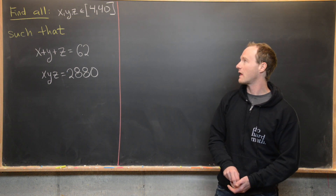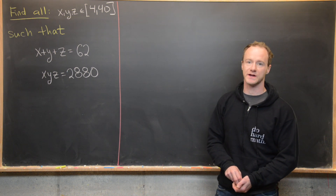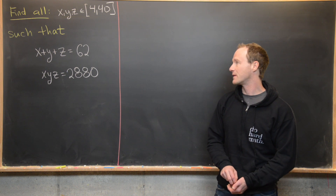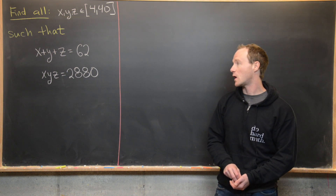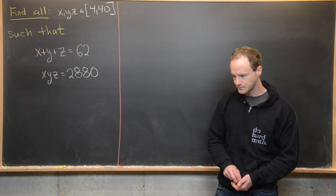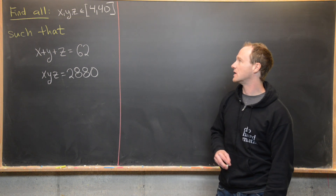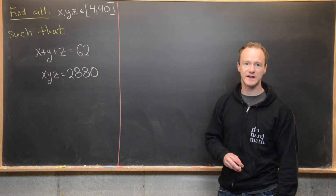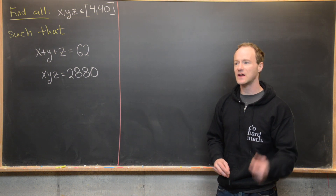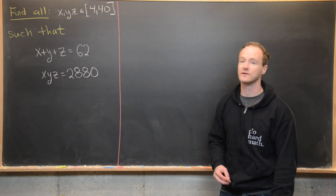We want to find all x, y, and z on the interval 4 to 40 satisfying two equations: x plus y plus z equals 62, and xyz equals 2880. I think this condition that x, y, and z are on the interval 4 to 40 is really just a hint, because I think what we'll get in the end is actually all solutions regardless of the interval.